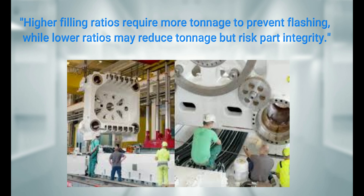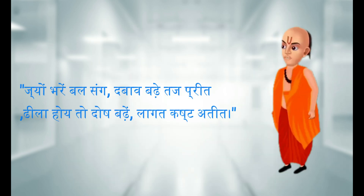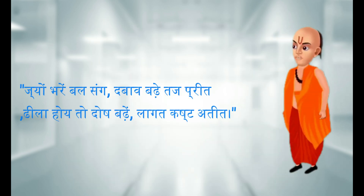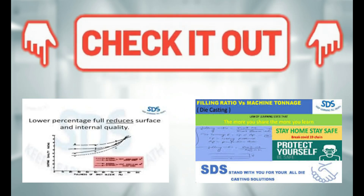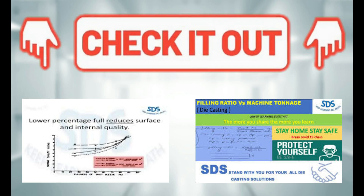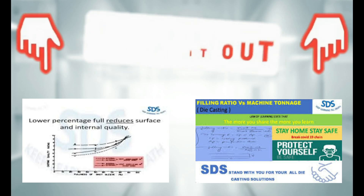A lower filling ratio might work with less tonnage, but it could compromise the integrity of the casting. To learn more, check out my other YouTube videos where I dive into topics like optimizing plunger speed, understanding machine power requirements, and more. Links are in the video description.